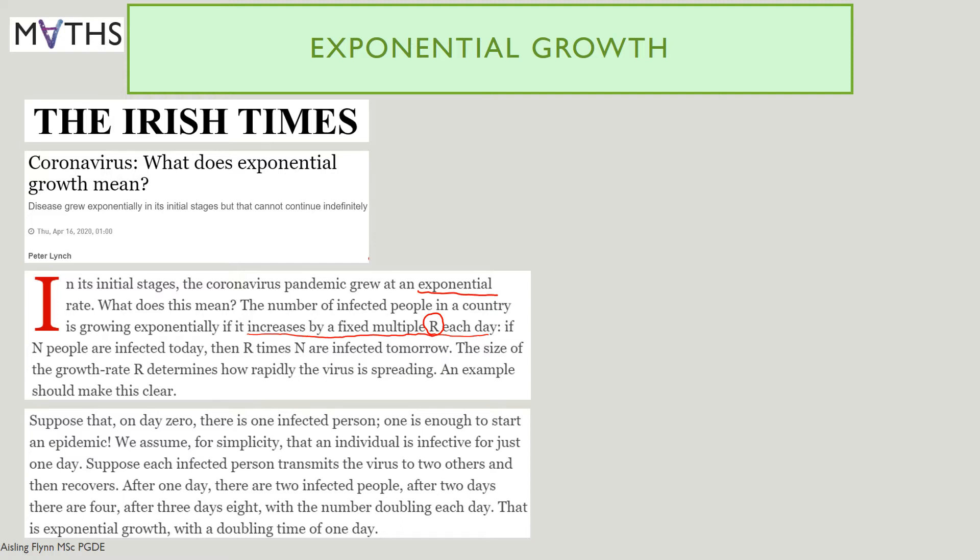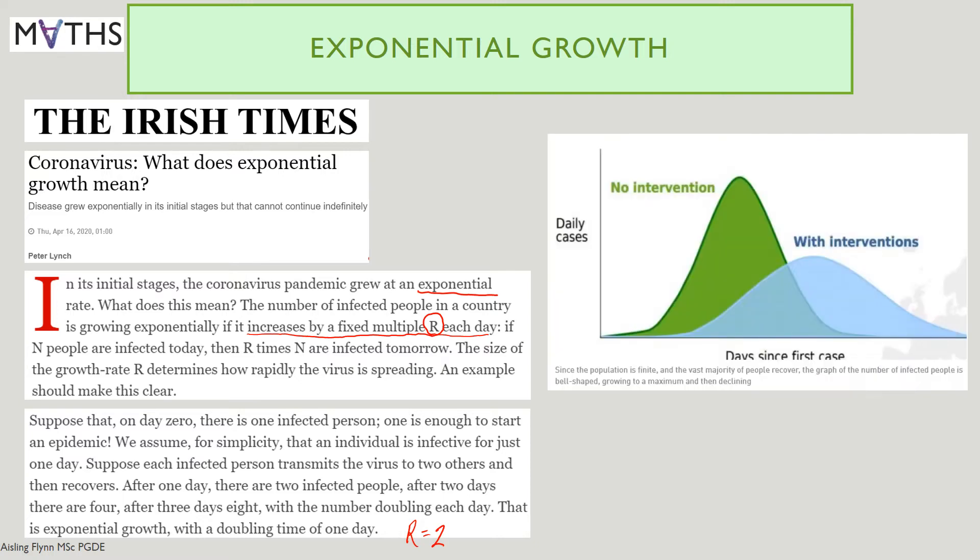You may hear in the news that they want to get that R number down by imposing restrictions. This is the graph that went with the article. The green shows daily cases with no intervention, and you'll see here the exponential growth. The numbers rise rapidly. It starts off with quite small numbers and rises rapidly. That's your exponential growth.